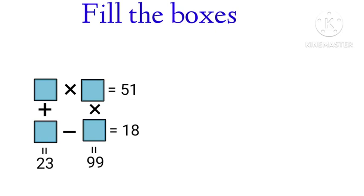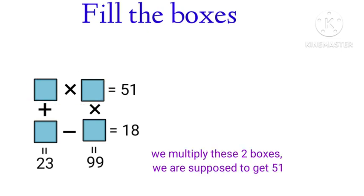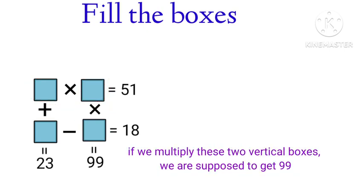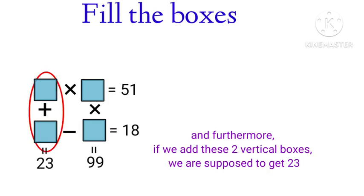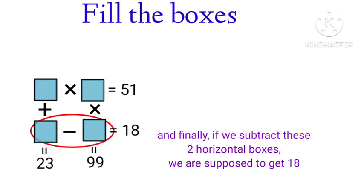Hi friends, welcome to my documentary. I am telling about how to fill 4 empty boxes by using their values. We multiply these 2 horizontal boxes and we are supposed to get 51. If we multiply these 2 vertical boxes we are supposed to get 99. If we add 2 vertical boxes we are supposed to get 23. And if we subtract these 2 horizontal boxes we are supposed to get 18.